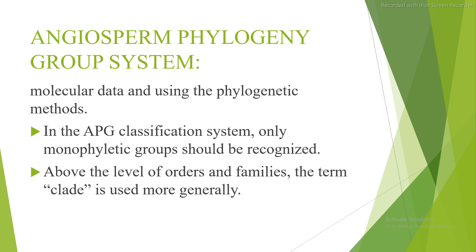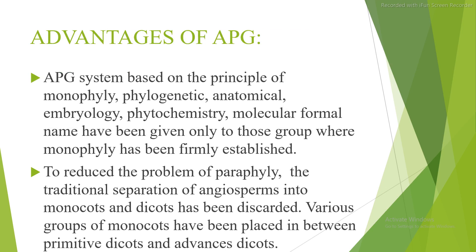In the APG classification system, only monophyletic groups are recognized above the level of orders and families, and the term 'clade' is used more generally. Advantages of APG: the system is based on the principle of monophyly, incorporating phylogenetic, anatomical, embryological, phytochemical, and molecular data. Formal names have been given only to groups where monophyly is firmly established. To reduce the problem of paraphyly, the traditional separation of angiosperms into monocots and dicots has been discarded.